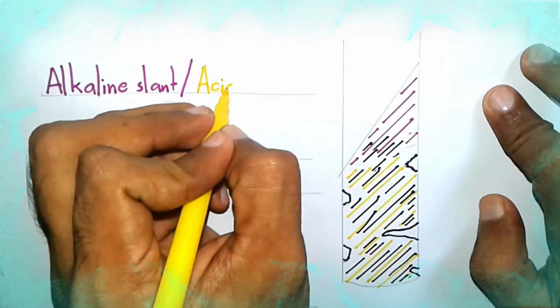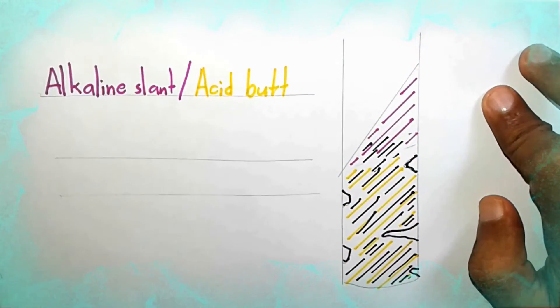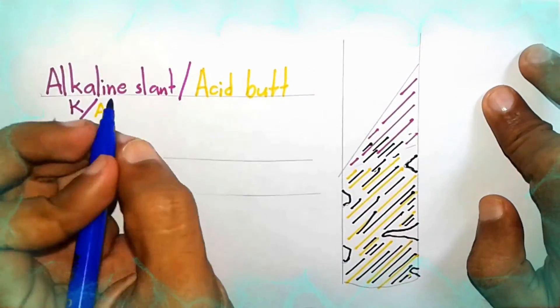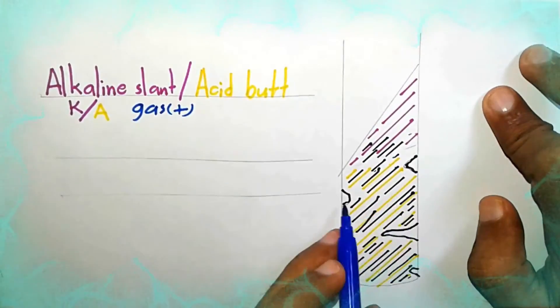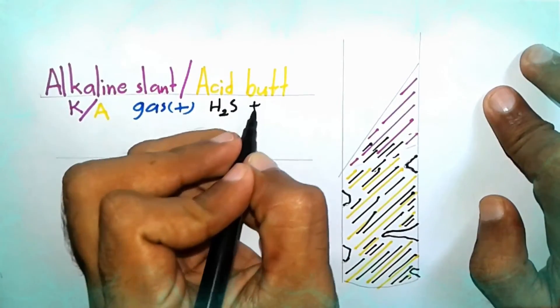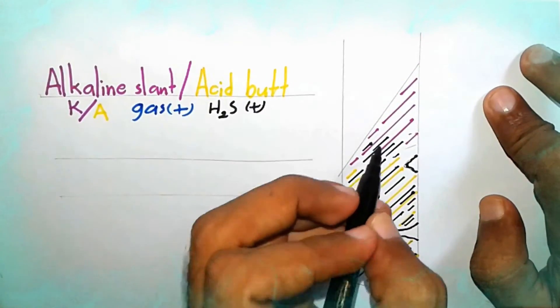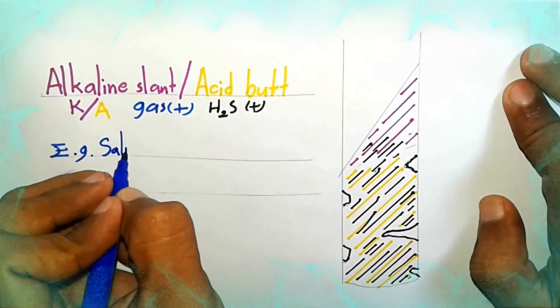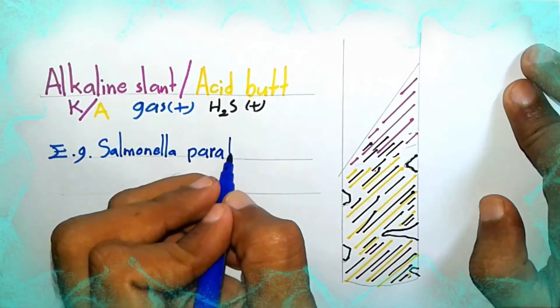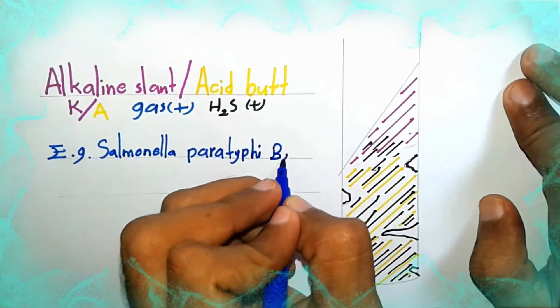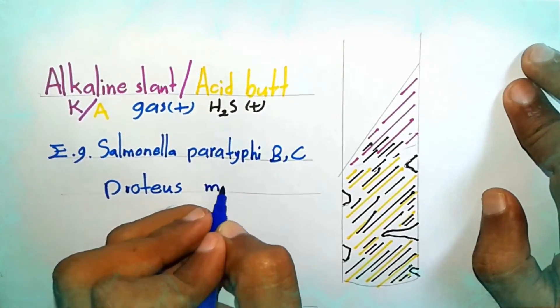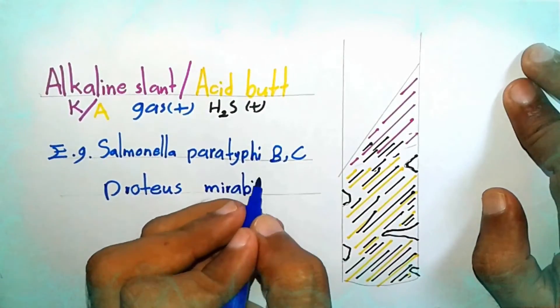Alkaline slant and Acid butt. Gas positive and H2S positive. Examples: Salmonella Paratyphi B, Salmonella Paratyphi C, Proteus Mirabilis.